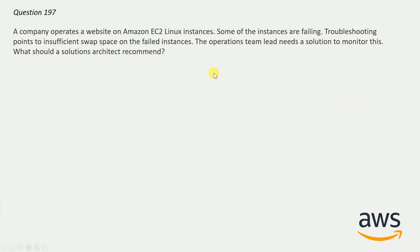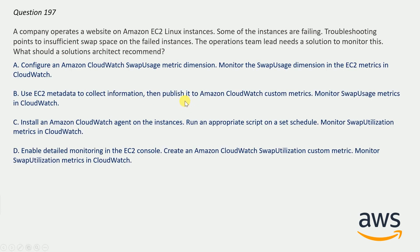Question number 197: A company operates a website on Amazon EC2 Linux instances. Some of the instances are failing. Troubleshooting points to insufficient swap space on the failed instances. The operations team needs a solution to monitor this. The correct answer is option C: Install an Amazon CloudWatch agent on the instances, run an appropriate script on a set schedule, and monitor swap utilization metrics in CloudWatch. One important note: the CloudWatch monitoring scripts are deprecated now, so it is recommended to use the CloudWatch agent to collect metrics and logs instead.